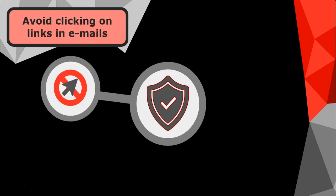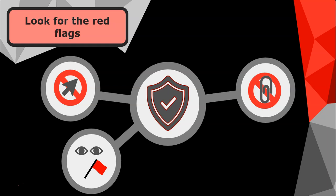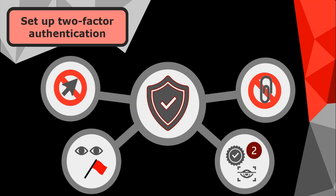There are lots of ways to protect yourself against spoofing. First, avoid clicking on links in emails — they could be sending you to a fake website to get your information. Be wary of strange attachments, as they could be used to install malware onto your devices. Also, look for the red flags we mentioned at the beginning of this video and try to identify when a message is suspicious.